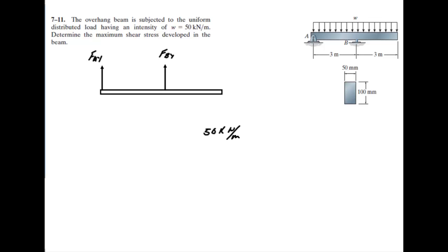If we take 50 kilonewtons per meter and multiply that times the length, which is 6 meters, the meters cancel out and that leaves you 300 kilonewtons happening right in the middle.